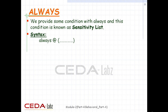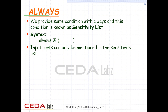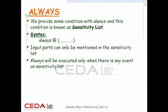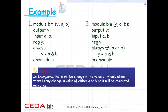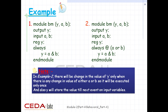The sensitivity list contains all the input ports, and the always block will only be executed when there is any event on any of the input ports. In Example 1, Y will be executed again and again. In Example 2, Y will change only when there is any change in the value of either A or B — so it will be executed only once in contrast to Example 1. Also, Y will store the value until the next event on the input variables.